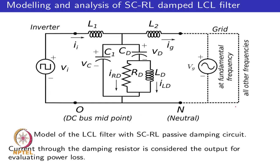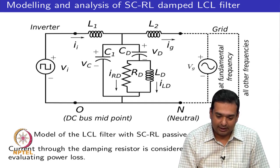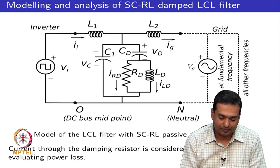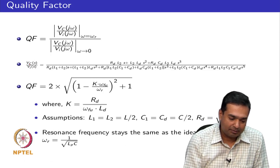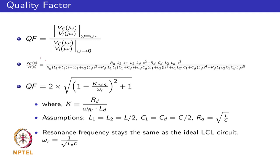To model such an LCL filter, one can make use of circuit analysis and then make state space models of the equivalent circuit of a grid-connected power converter with a damped LCL filter. The state space models can be used to derive transfer functions between different parameters — for example, the capacitor voltage to the inverter output voltage. We also derived an approximate expression for the quality factor using parameter k. We can also use the state space model of the LCL filter with damping to evaluate power loss.